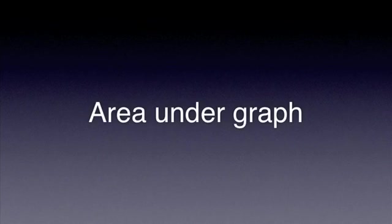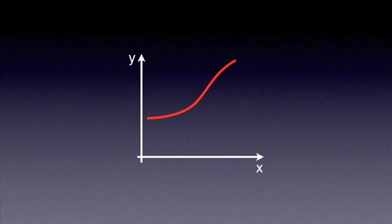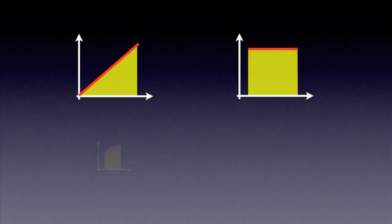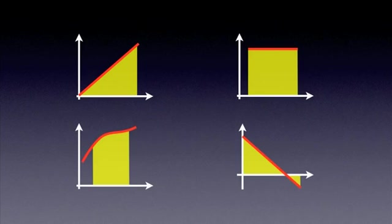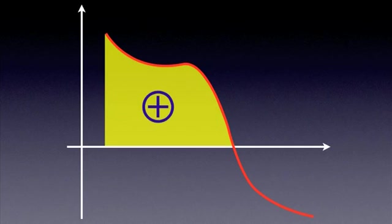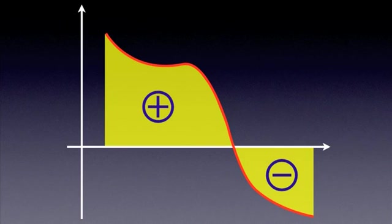Let's now move on to the second relevant characteristic of graphs, the area under a graph. The area under a graph refers to the surface area delimited by the graph, the horizontal axis, and vertical lines parallel to the vertical axis. Here are a few examples. By convention, the area above the horizontal axis is considered to be positive, and the area below is considered to be negative.